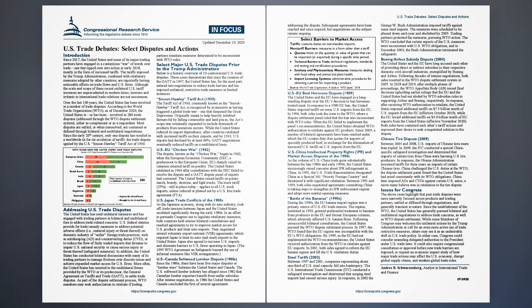Addressing U.S. trade disputes: The United States has used unilateral measures and has engaged with trading partners in bilateral and multilateral fora to address trade-related concerns. U.S. federal statutes provide for trade remedy measures to address potential adverse effects — material injury or threat thereof — on domestic industry of unfair foreign trade practices, such as anti-dumping (AD) and countervailing duties (CVD), or to reduce the flow of fairly traded imports that threaten to impair U.S. national security or cause serious injury through safeguard measures. The United States has also conducted bilateral discussions with trading partners and has resorted to the multilateral forum provided by the WTO or its predecessor, the General Agreement on Tariffs and Trade (GATT), to settle trade disputes. As part of the dispute settlement process, WTO members may seek authorization to retaliate if trading partners maintain measures determined to be inconsistent with WTO rules.